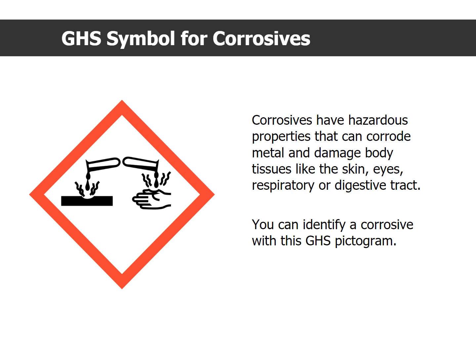Corrosives have hazardous properties that can corrode metal and damage body tissues like the skin, eyes, respiratory, or digestive tract. You can identify a corrosive with this GHS pictogram.